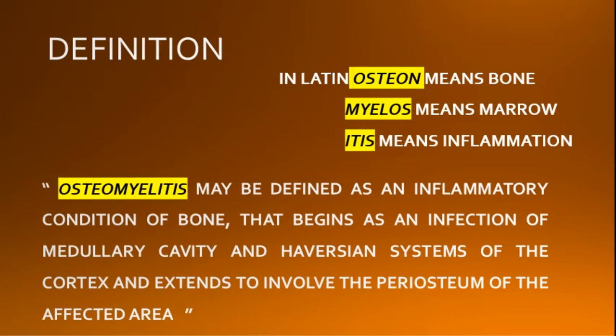Osteon in Latin means bone, myelos means marrow, and itis means inflammation. Therefore, osteomyelitis is an inflammation of the medullary portion of bone, or bone marrow, or cancellous bone. However, the process of osteomyelitis is rarely confined to only the medulla — it involves cortical bone and periosteum as well. Therefore, osteomyelitis may be defined as an inflammatory condition of bone that begins as an infection of the medullary cavity and Haversian systems of the cortex, and extends to involve the periosteum of the affected area.